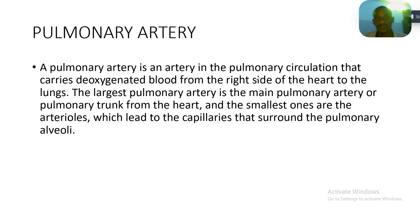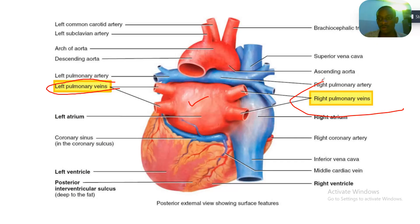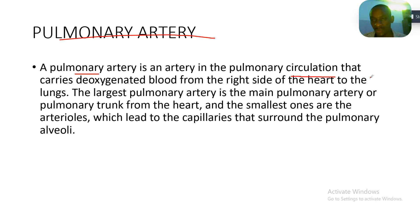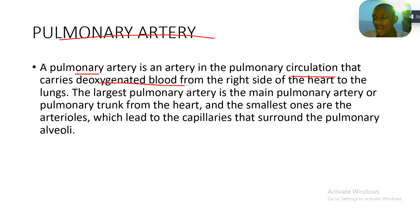Now, how about the pulmonary artery? Going back to the picture, you can see the pulmonary artery shown in blue, indicating that they carry deoxygenated blood. All arteries in the body carry oxygenated blood, except the pulmonary artery, which carries deoxygenated blood. The pulmonary artery is an artery in the pulmonary circulation that carries deoxygenated blood from the right side of the heart — and of course, the right side of the heart deals with deoxygenated blood.